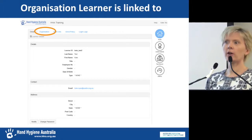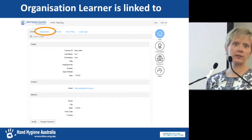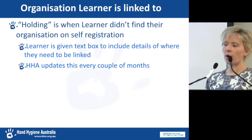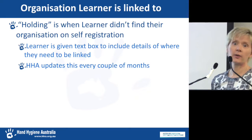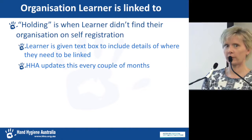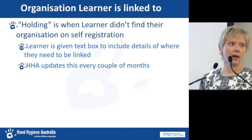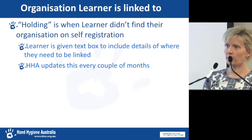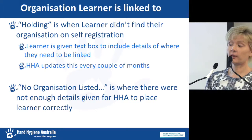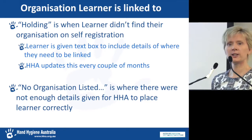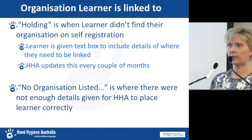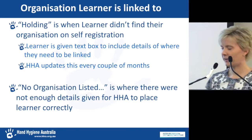If they click on their organisation tab, they can see which organisation they attached themselves to on registration. If their organisation is called 'holding,' it means they didn't find their organisation on registration and were given a text box to fill in details. If they're in an organisation called 'No Organisation Listed,' they didn't provide enough details in that text box for Hand Hygiene Australia to place them correctly.